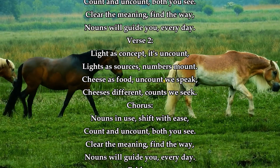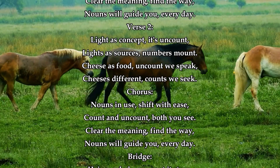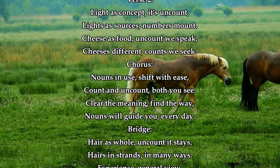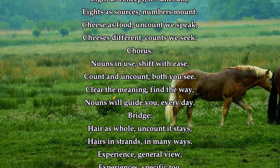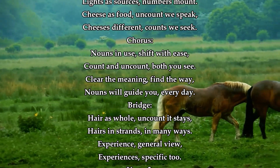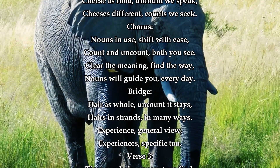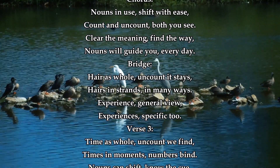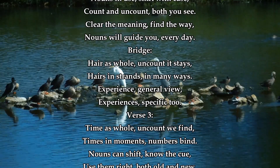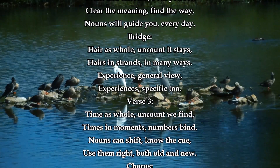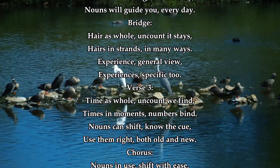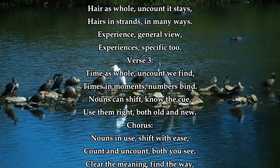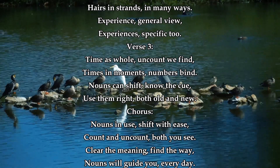Light as concept, it's uncountable. Lights as sources — numbers, nouns. Cheese as food, uncountable we speak; cheeses as different varieties, we say. Hair as whole, uncountable it stays; hairs and strands in many ways. Experience in general view; experiences, specific too. Time as whole, uncountable we find; times in moments, numbers bind. Nouns can shift — know the cue. Use them right, both old and new.